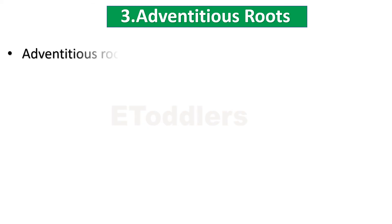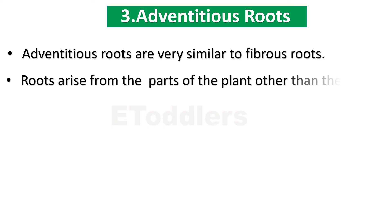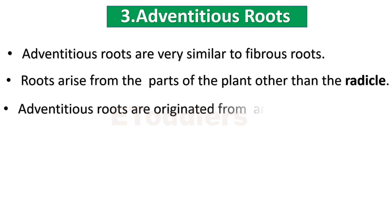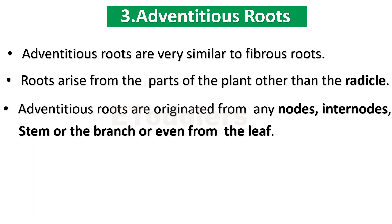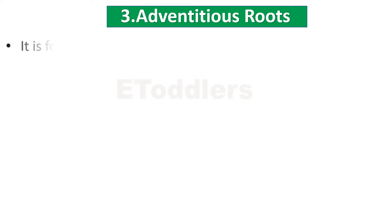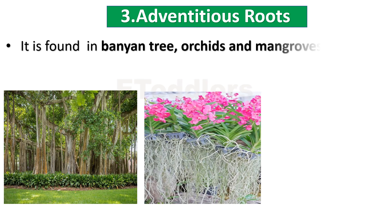Learn about adventitious roots. Adventitious roots are very similar to fibrous roots. Roots arise from parts of the plant other than the radicle. Adventitious roots originate from any nodes, inter-nodes, stem, or the branch, or even from the leaf. They are found in banyan trees, orchids, and mangroves, etc.